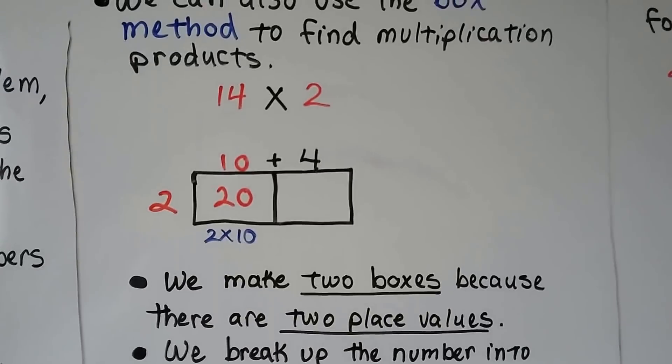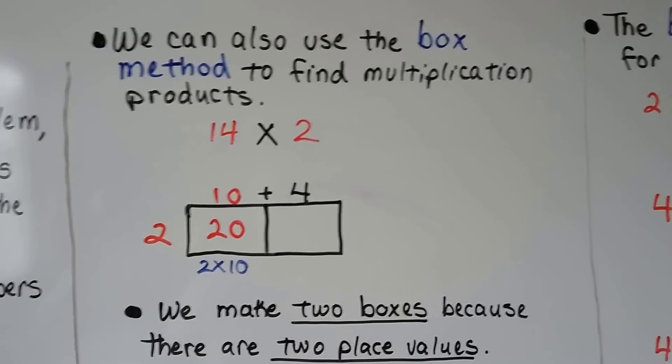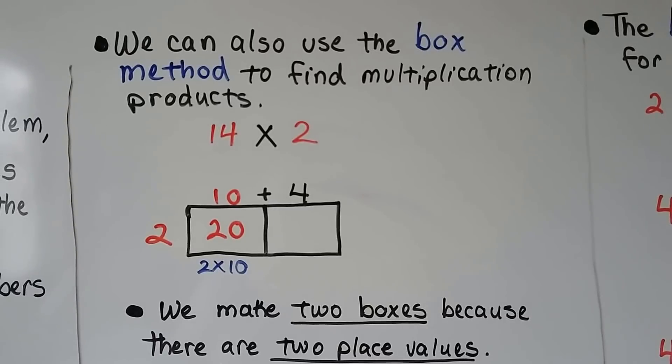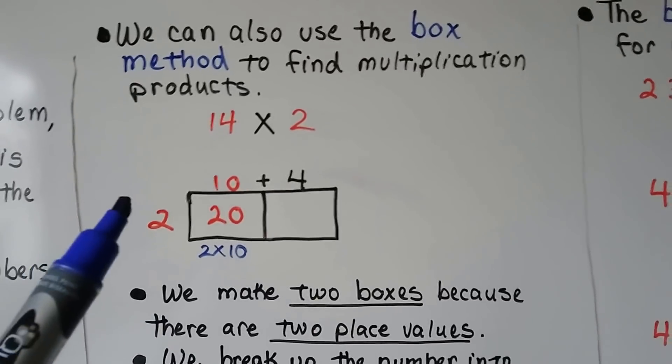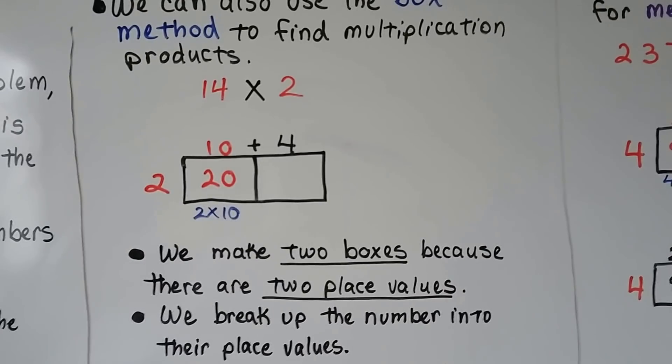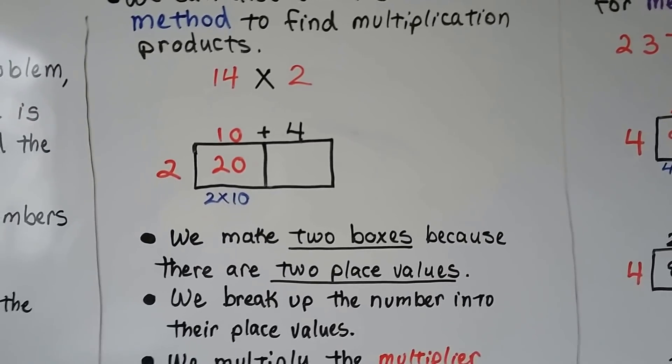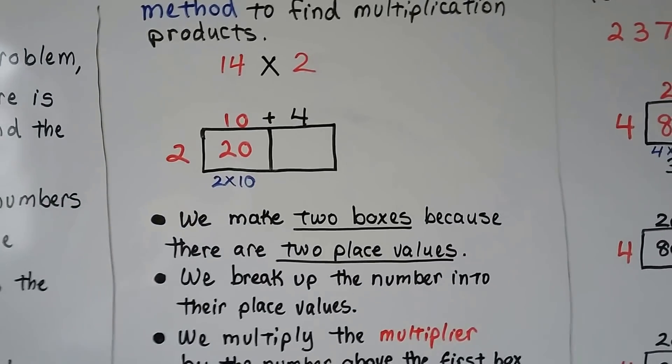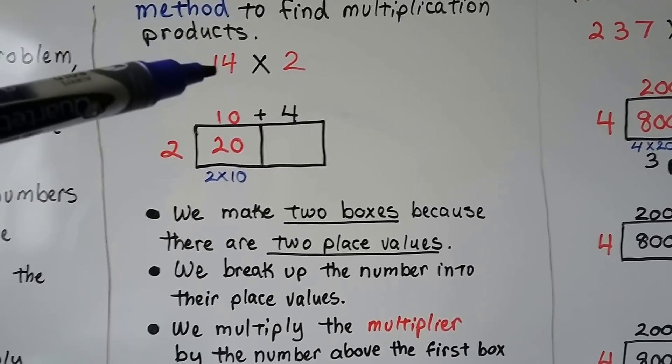We can also use what's called the box method to find multiplication products. For 14 times 2, we make two boxes because there's two place values in 14. We break the number up into the place value, so a 14 would be a 10 and a 4.